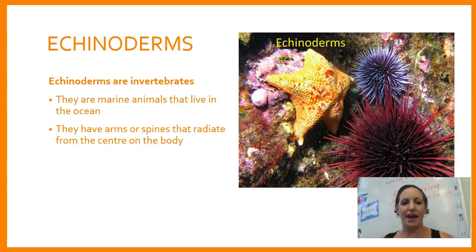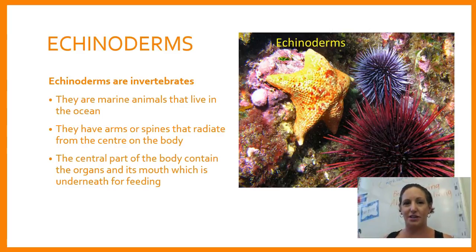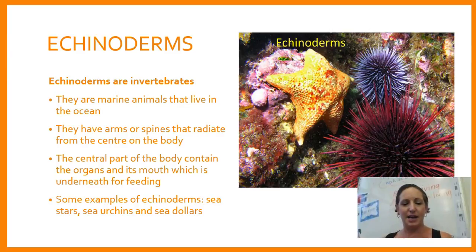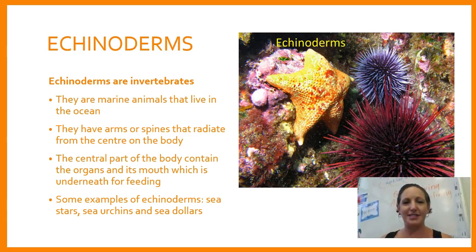Echinoderms are invertebrates and they are marine animals that live in the ocean. They have arms or spines that radiate from the center of their body, and the central part contains the organs and mouth, which is underneath for feeding. Some examples of echinoderms are sea stars, sea urchins, and sand dollars. And that's the end of that video — bye!